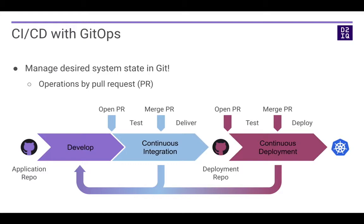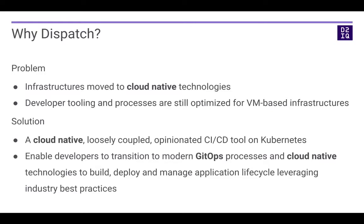These concepts are all well known and have become very popular in the past couple years, and people actually use existing CI systems to exercise these processes. So why do you want to build Dispatch given that we can achieve these principles using existing software? The problem we see is that there's a gap: all existing software is mostly based on virtual machines. Let's take Jenkins as an example. Jenkins is a really solid software for doing continuous integration, and it used to run on virtual machines.